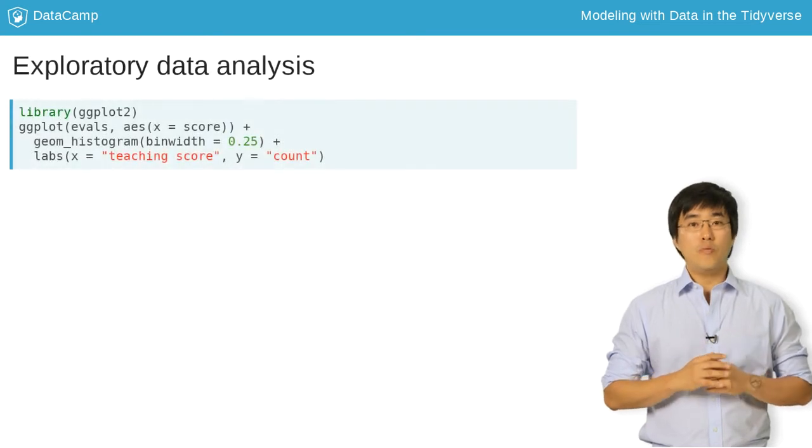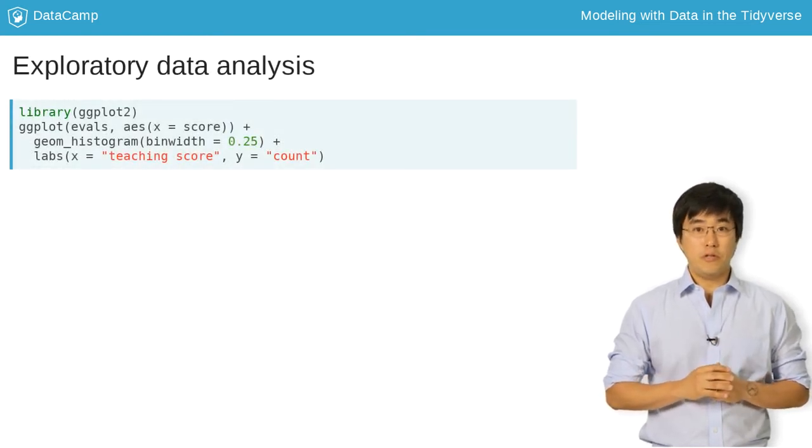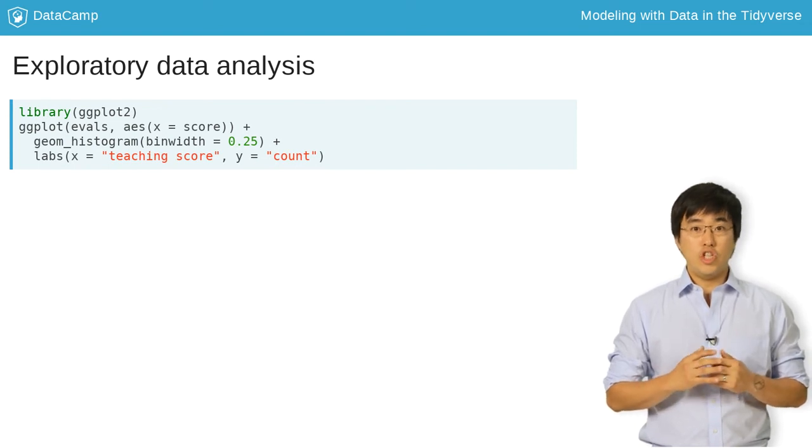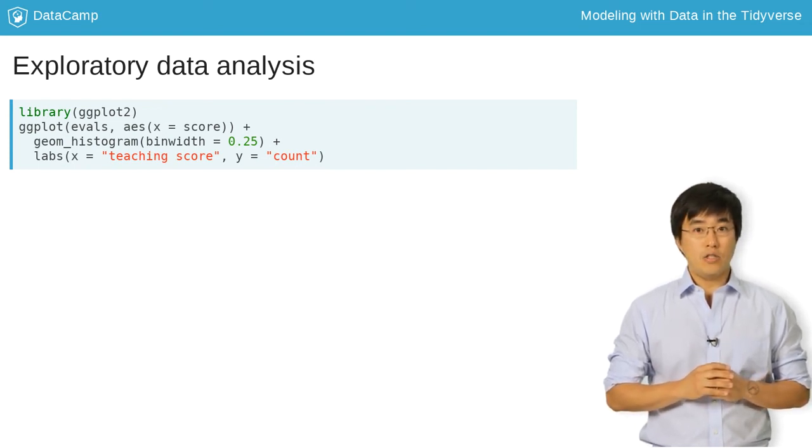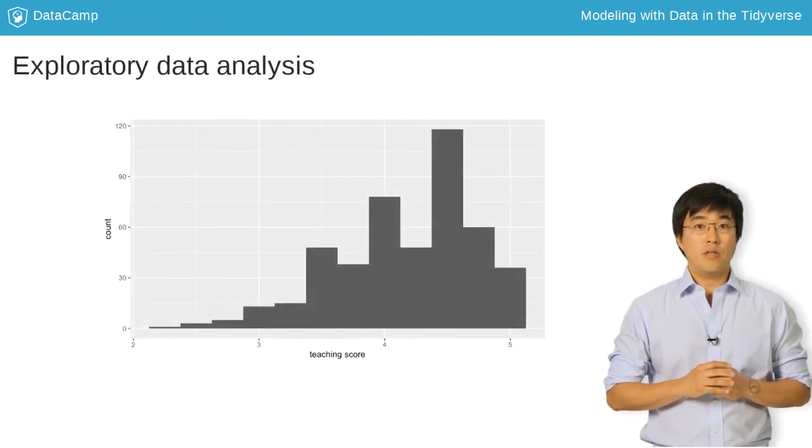Since score is numerical, let's construct a histogram to visualize its distribution by using geom_histogram from the ggplot2 package, where the x-aesthetic is mapped to score. Let's also set a bin width of 0.25. Observe: the largest score is 5 and most scores are between about 3 and 5. But what's the average?